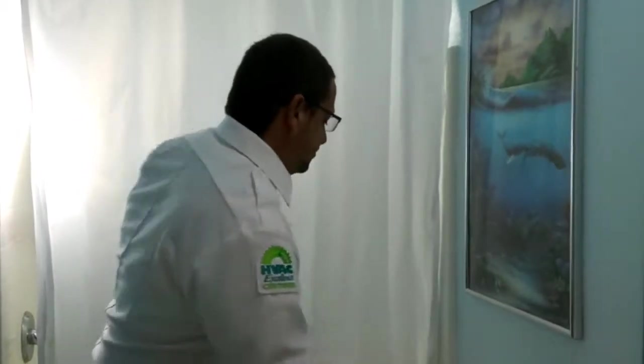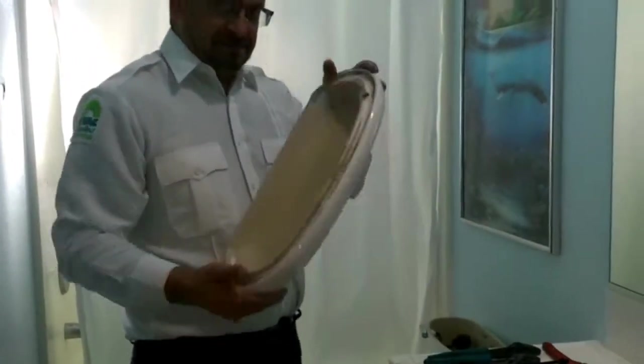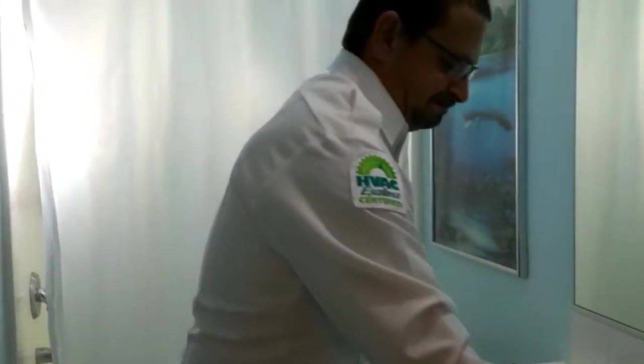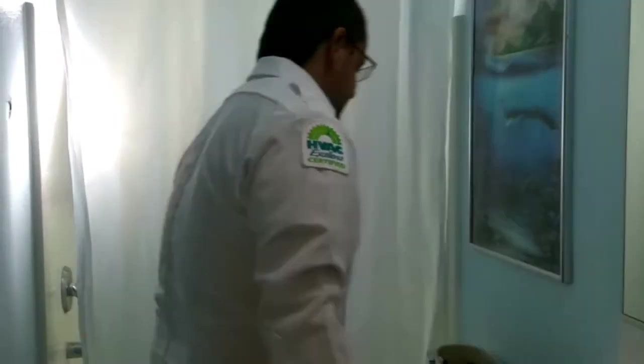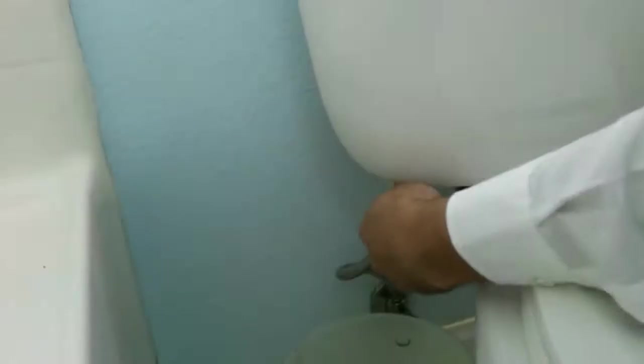So what we're going to do first is remove the top cover of the toilet, as you can see here. Next, underneath here, you're going to detach from the main water line. Make sure that your water line is shut off, which we have done previously.